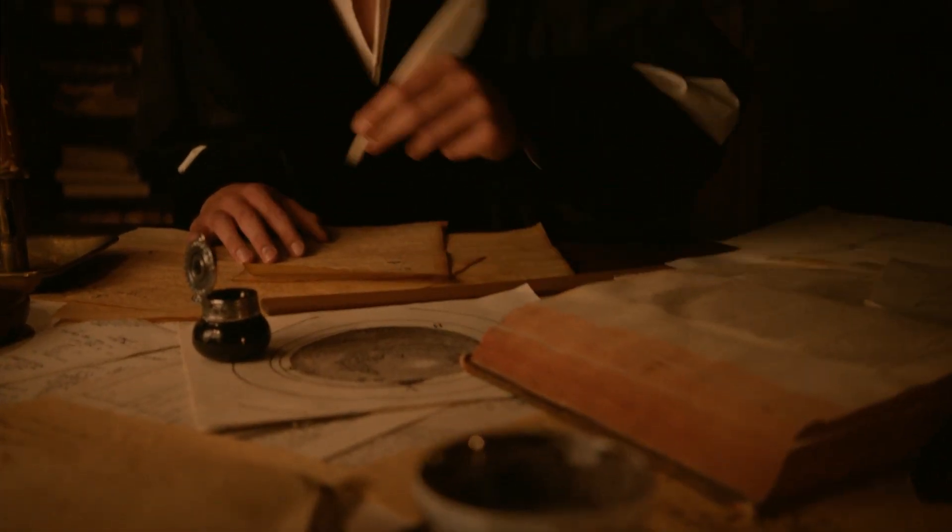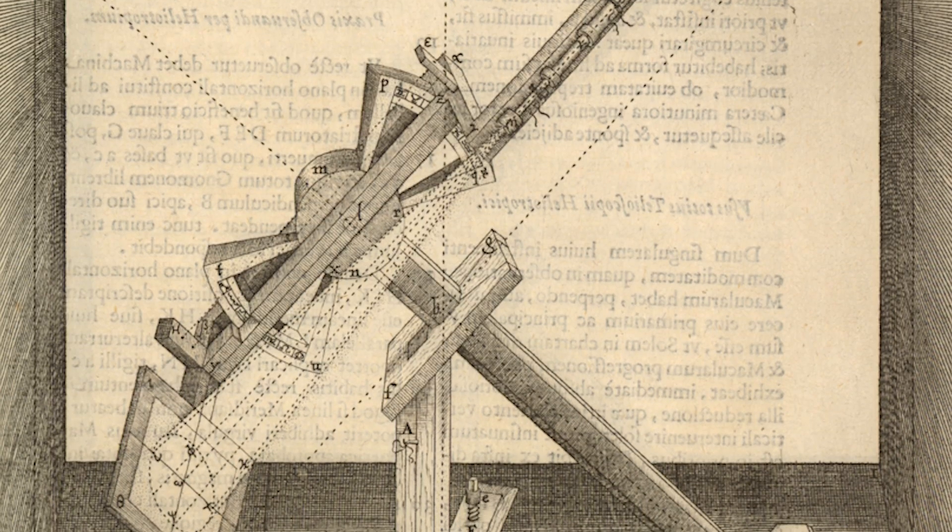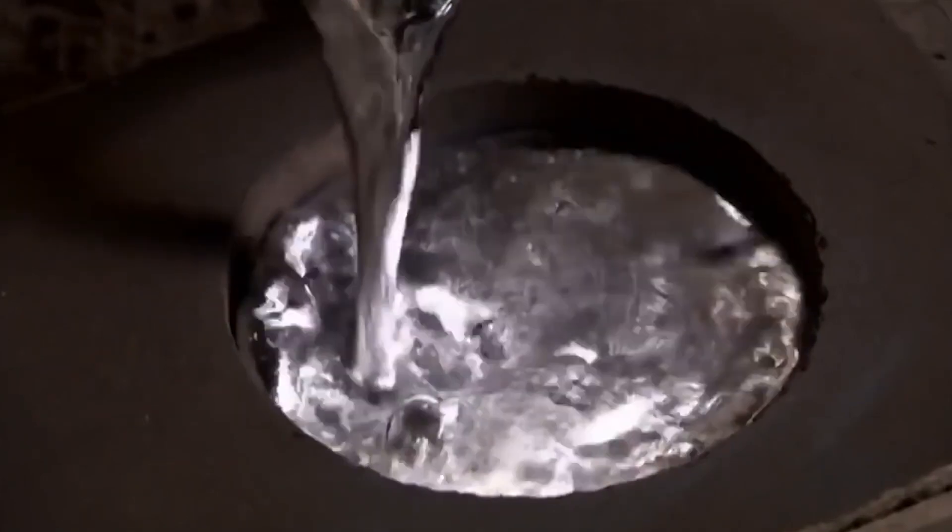Around the same time, around 1611, Christoph Scheiner in Germany invented the first helioscope. He realized that by replacing the standard glass in a normal telescope with colored or smoked glass, one could safely observe the Sun directly without harming one's health.